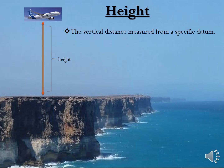The first definition is Height. The vertical distance measured from a specific datum is called height. The datum here is Above Ground Level. Whenever we measure the vertical distance from above ground level, we call it height.